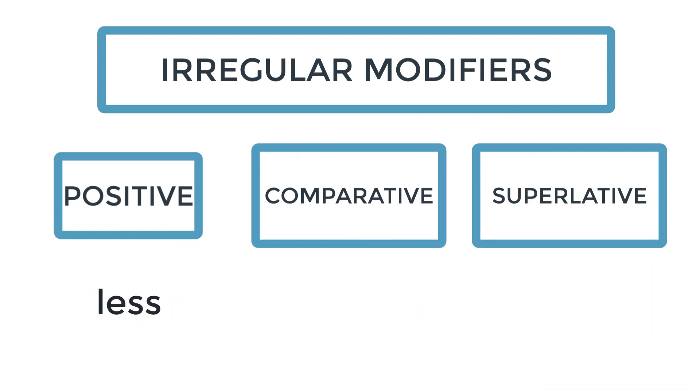Let's look at the word less. The comparative for less is lesser. Here it follows the pattern. But the superlative is not lessest. It is least. Less, lesser, least.